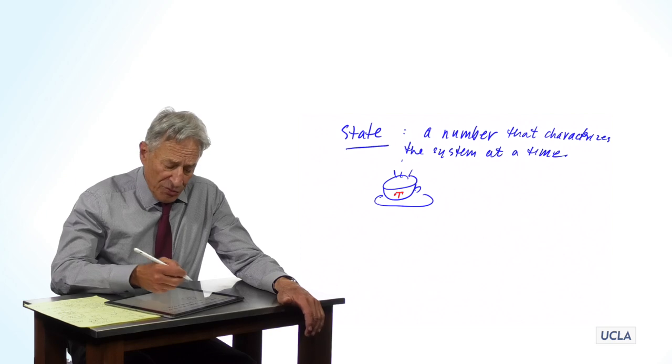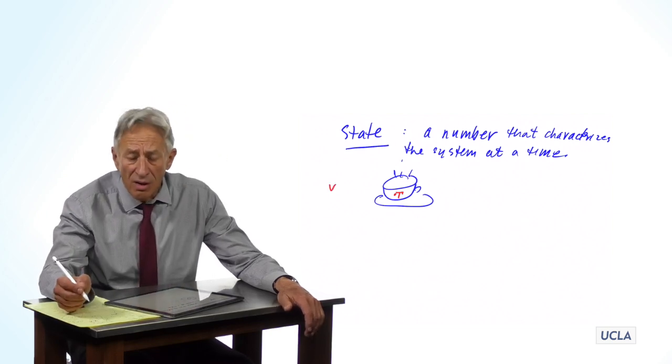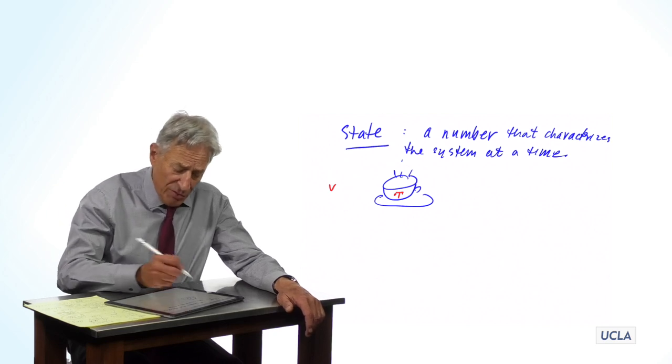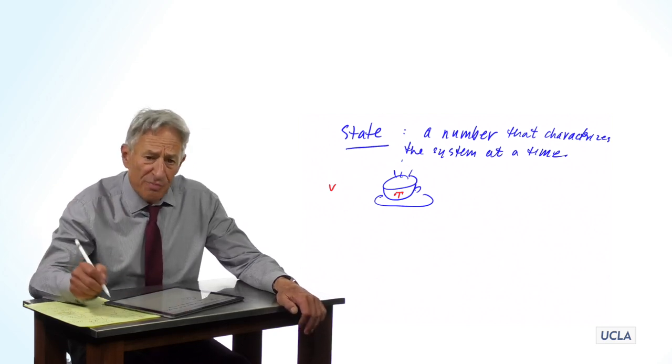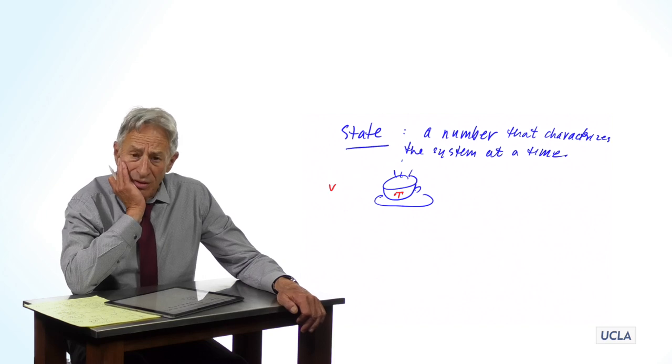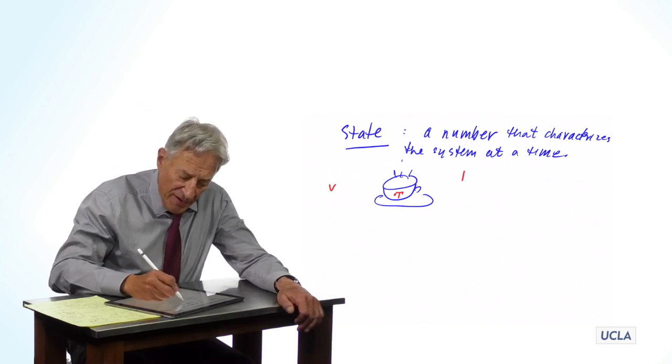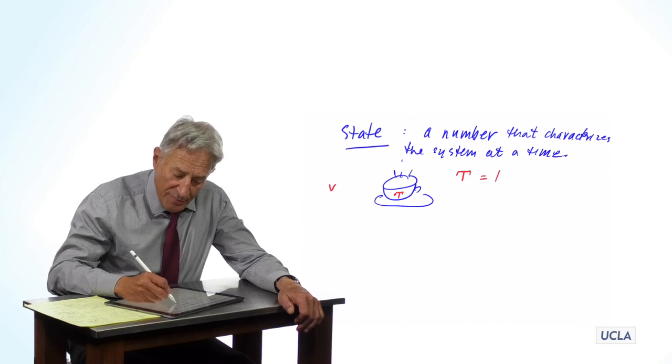In choosing that — why do I choose temperature and not the amount of coffee or the other variables that describe the system? Simply because I'm interested in the temperature of the cup of coffee in this case. If I was interested in how fast it was evaporating, I would probably choose a different state variable — I might choose the volume. If I was interested in where the cup of coffee was in the room, I might choose its position. But in this case, it's just going to be a single variable T, and T is going to be the temperature.